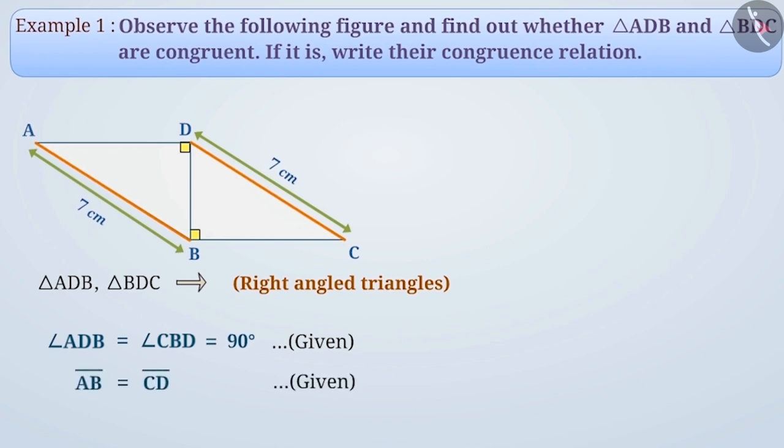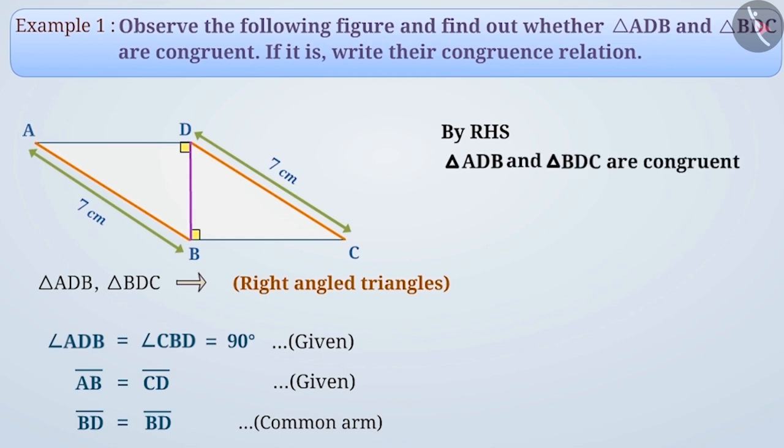Do you realize anything else by looking at the given figure? Give it a thought. Absolutely correct. The side BD in both these triangles is common. That is, BD equals BD shows us that the hypotenuse of these two right-angled triangles is equal and one arm is equal. So, here we can say that triangle ADB and triangle BDC are congruent with the RHS theorem.